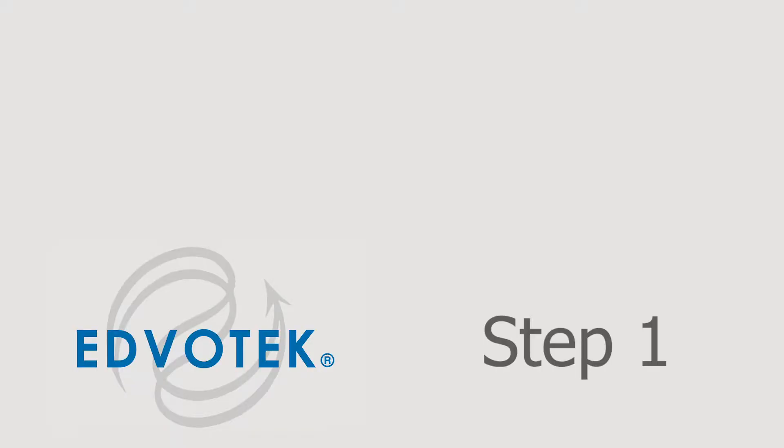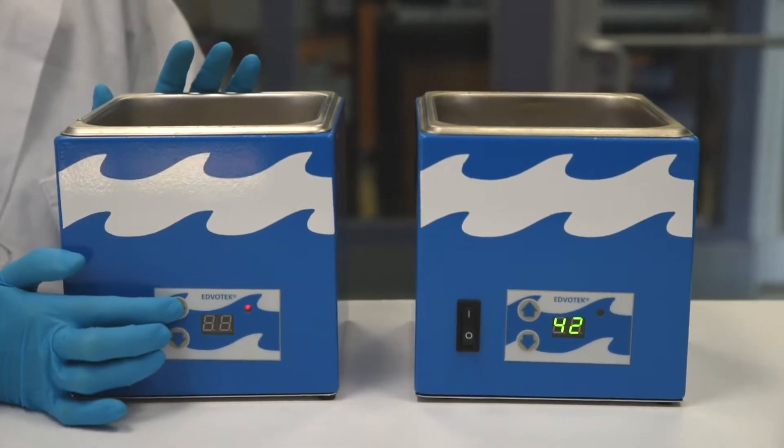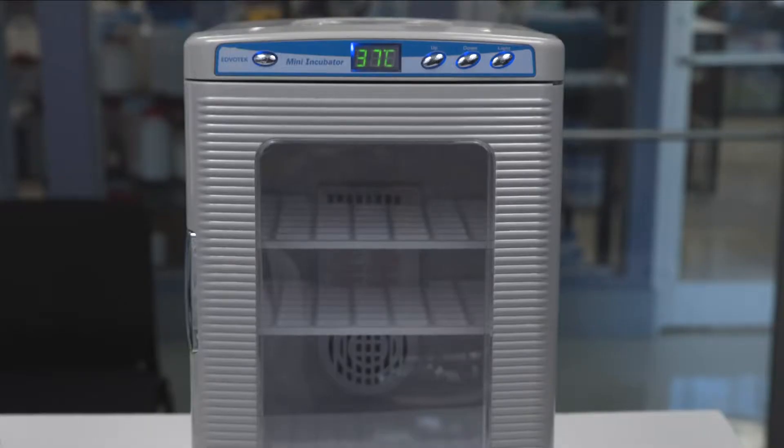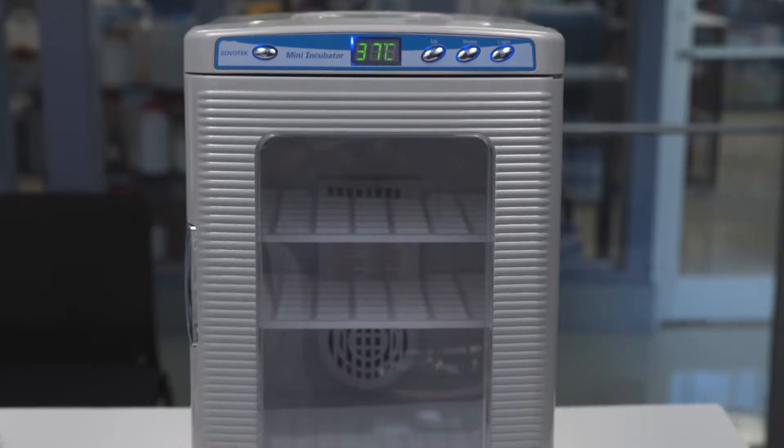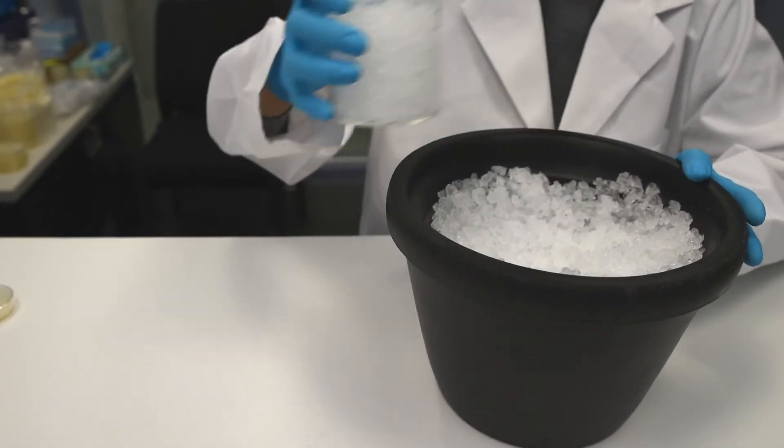Step 1: Equilibrate two water baths, one at 37 degrees Celsius and the other at 42 degrees Celsius. Set the incubation oven at 37 degrees Celsius. Step 2: Prepare ice or ice water baths for each group.